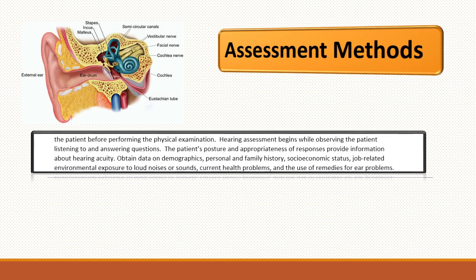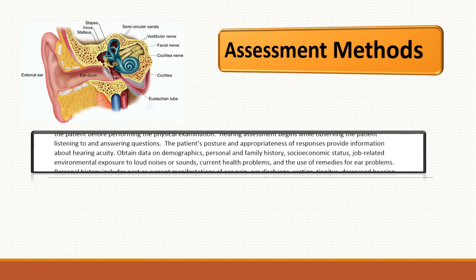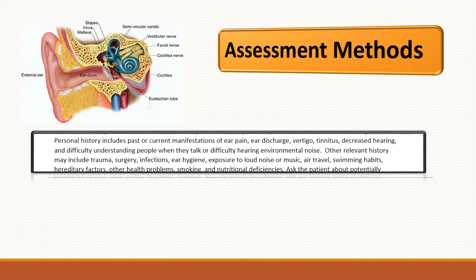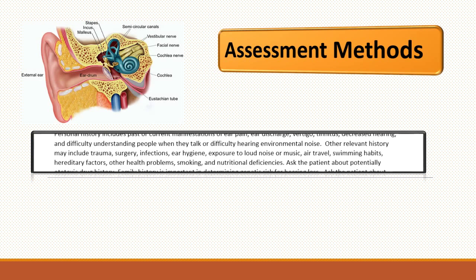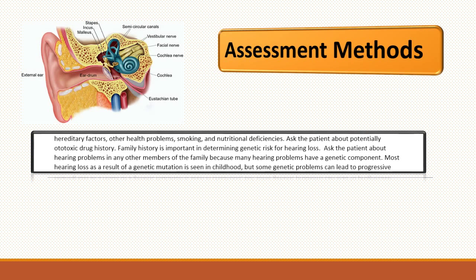You want to obtain data on demographics and personal and family history, socioeconomic status, and job-related exposure to loud noises. Ask them about any current health problems and the use of remedies for ear problems used at home. Any personal history including past and current history of ear pain, ear discharge, tinnitus, decreased hearing, and difficulty understanding people when talking, or any history of working in a noisy environment is important to note. Any relevant history that includes trauma, surgery, infection, ear hygiene, exposure to loud noise, swimming habits, and hereditary problems should all be noted, including smoking and nutritional deficiencies.